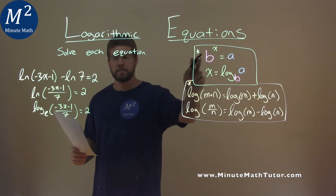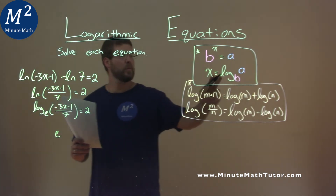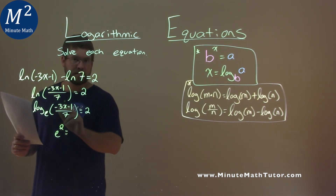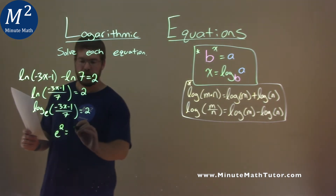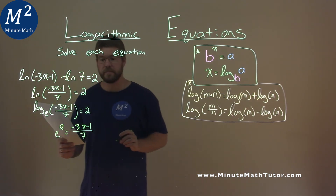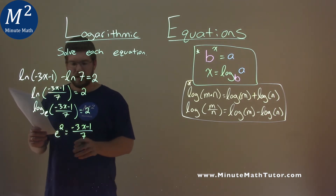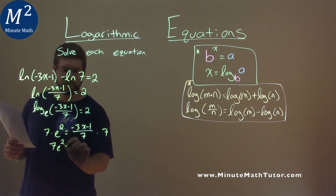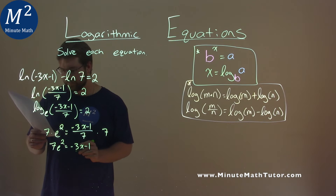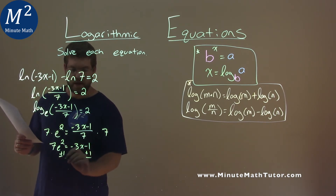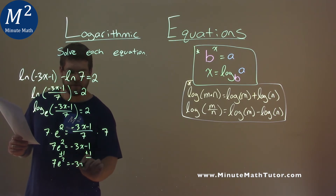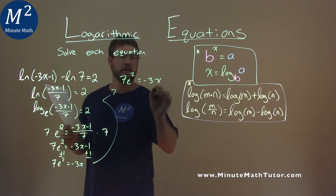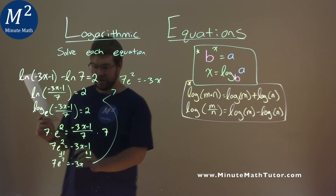Remember natural log is log base e: log base e of negative 3x minus 1 over 7, equal to 2. Let's convert using our formula. Our base is e — the b value — and we raise it to what the logarithm equals, which is 2. That equals the a value: negative 3x minus 1 over 7. We multiply both sides by 7, giving 7e squared equals negative 3x minus 1. Add 1 to both sides: 7e squared plus 1 equals negative 3x.